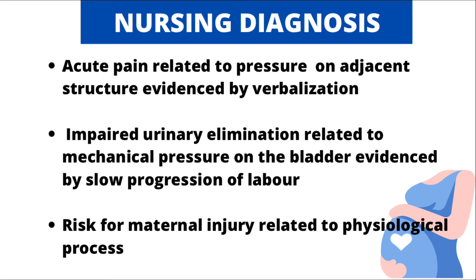The second diagnosis is impaired urinary elimination related to mechanical pressure on the bladder, evidenced by slow progression of labor. The contraction and relaxation of the uterus, as well as pressure from the presenting part of the baby — which could be the head or the buttock — will exert pressure on the bladder, so the woman will not be able to void. The third diagnosis is risk for maternal injury related to physiological process. There is risk for injuries such as cervical laceration if the woman bears down too early, and the woman could also fall while moving around in the ward.